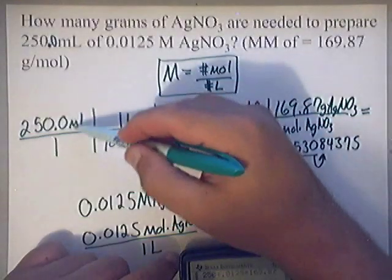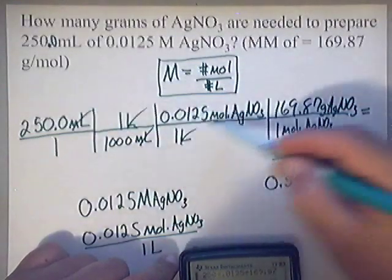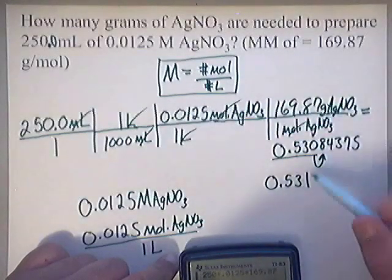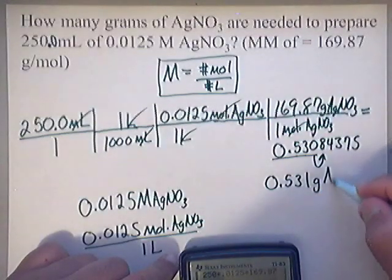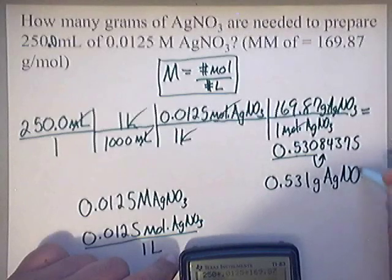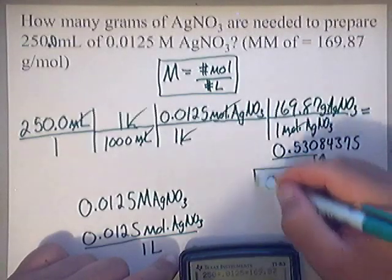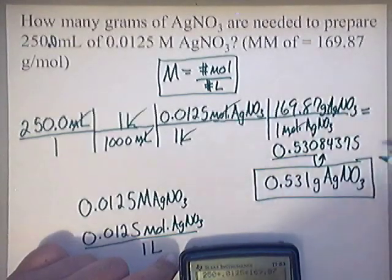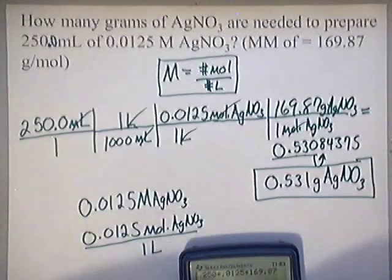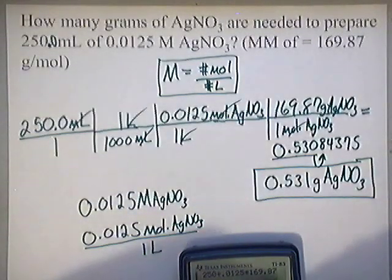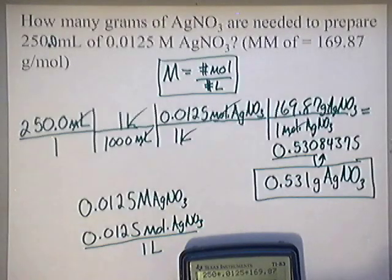And my units, if you look, will be grams of silver nitrate. And that's how you take a molarity calculation. Use it in your favor to find out how many grams of the solute that you have. Well, I hope this helps and good luck with it. Just watch it a few times and you should have it down pat. Bye, guys.